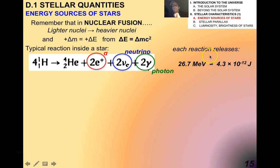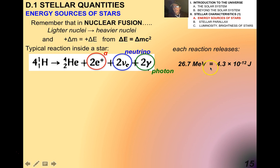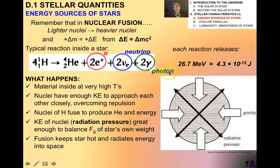Remember that each reaction in a nuclear fusion reaction releases an incredible amount of energy, considering how many reactions there are. It's about 26.7 mega electron volts.